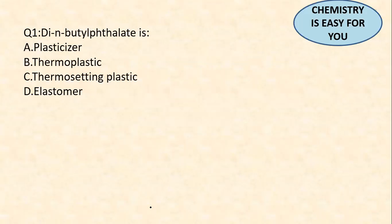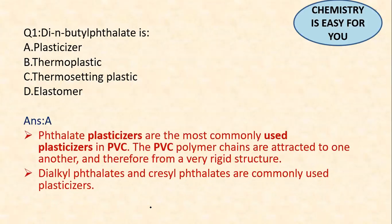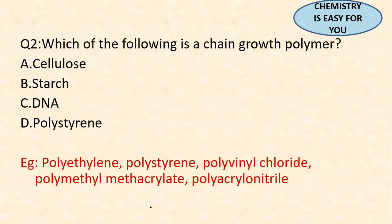The first question is: di-n-butyl phthalate is a plasticizer, thermoplastic, thermosetting plastic, or elastomer? The answer is option A — plasticizers. Phthalate plasticizers are the most commonly used plasticizers in PVC (polyvinyl chloride). In PVC, polymer chains are attracted to one another forming a very rigid structure. The very common ones are dialkyl phthalates and cresyl phthalates.